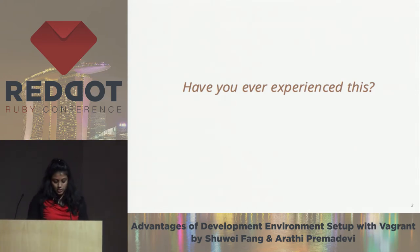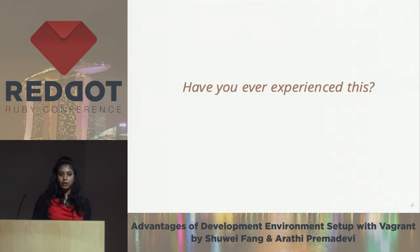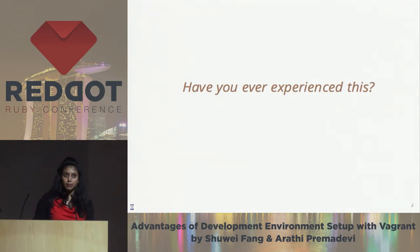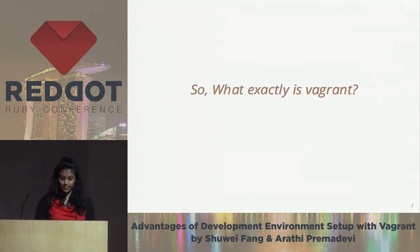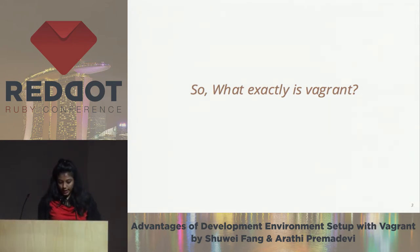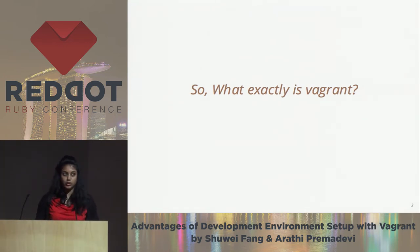So what we wanted was one development environment which can be repeatable and shareable across all developers in the team. So what did we do? We used Vagrant. Vagrant is software written in Ruby, it's open source, and it can be used on virtual machines like VMware, VirtualBox, or Amazon EC2.